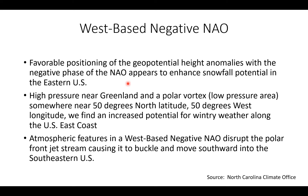In general, the west-based negative NAO shows favorable positioning of the geopotential height anomalies, with higher height anomalies appearing to enhance snowfall potential in the eastern U.S. Generally, what we look for is high pressure near Greenland and then a polar vortex or some type of polar low-pressure area somewhere near 50 degrees north latitude and 50 degrees west longitude, which correlates to an increased potential for wintry weather along the U.S. east coast. The atmospheric features in the west-based negative NAO tend to disrupt the polar front jet stream, causing it to buckle and move southward into the southeastern U.S.